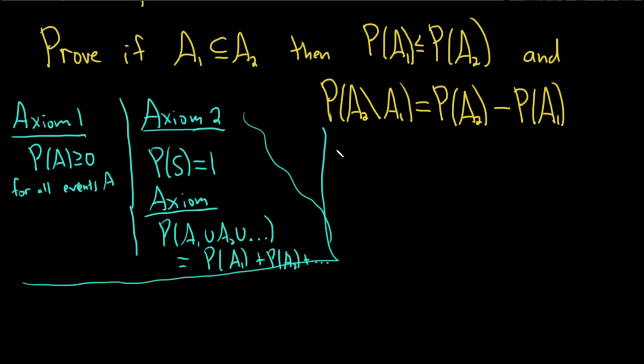So let's start. Proof. Okay. So first we need to think about this a little bit. So we have A sub 1, a subset of A sub 2, and we somehow want to create this inequality and we also somehow want to create this equality.